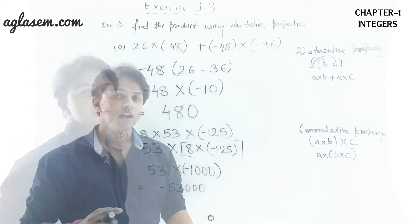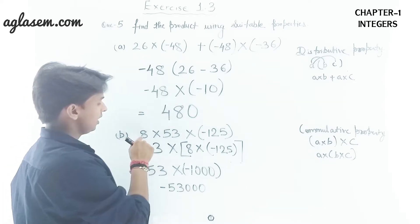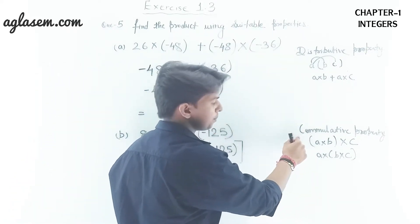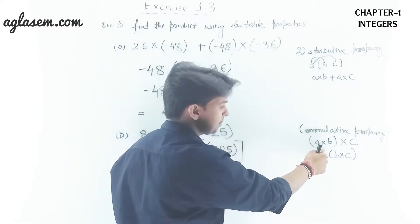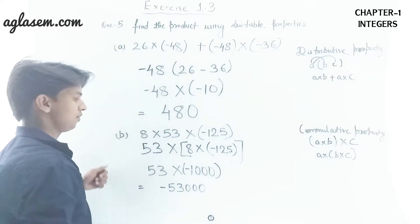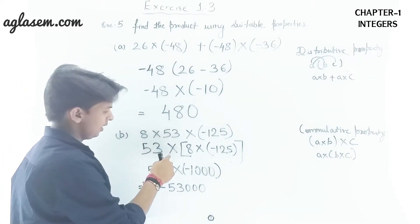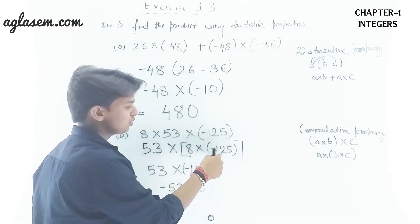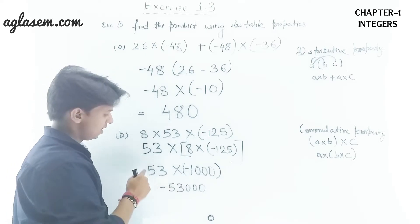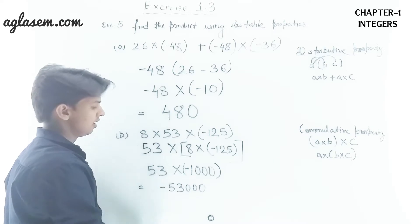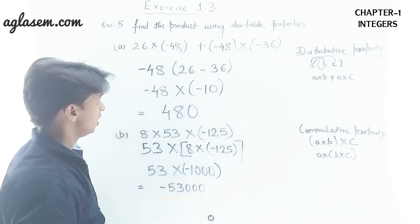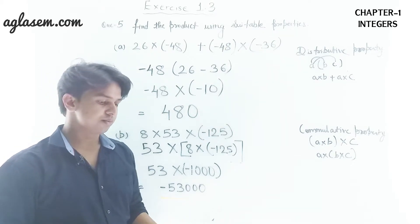Moving to Part b: 8 × 53 × (−125). Here we use the associative property, rearranging as 53 × [8 × (−125)]. Solving the bracket first: 8 × (−125) = −1000. Then 53 × (−1000) = −53,000. This is the product for Part b.